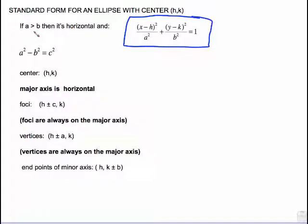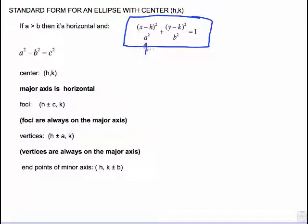So if a is greater than b — if the number under x is bigger than the number under y — then we know it is a horizontal ellipse. Also, to find c, we do a squared minus b squared equals c squared. It is a squared first because a is bigger. The center is h, k, just like it was for a circle. The major axis is horizontal.